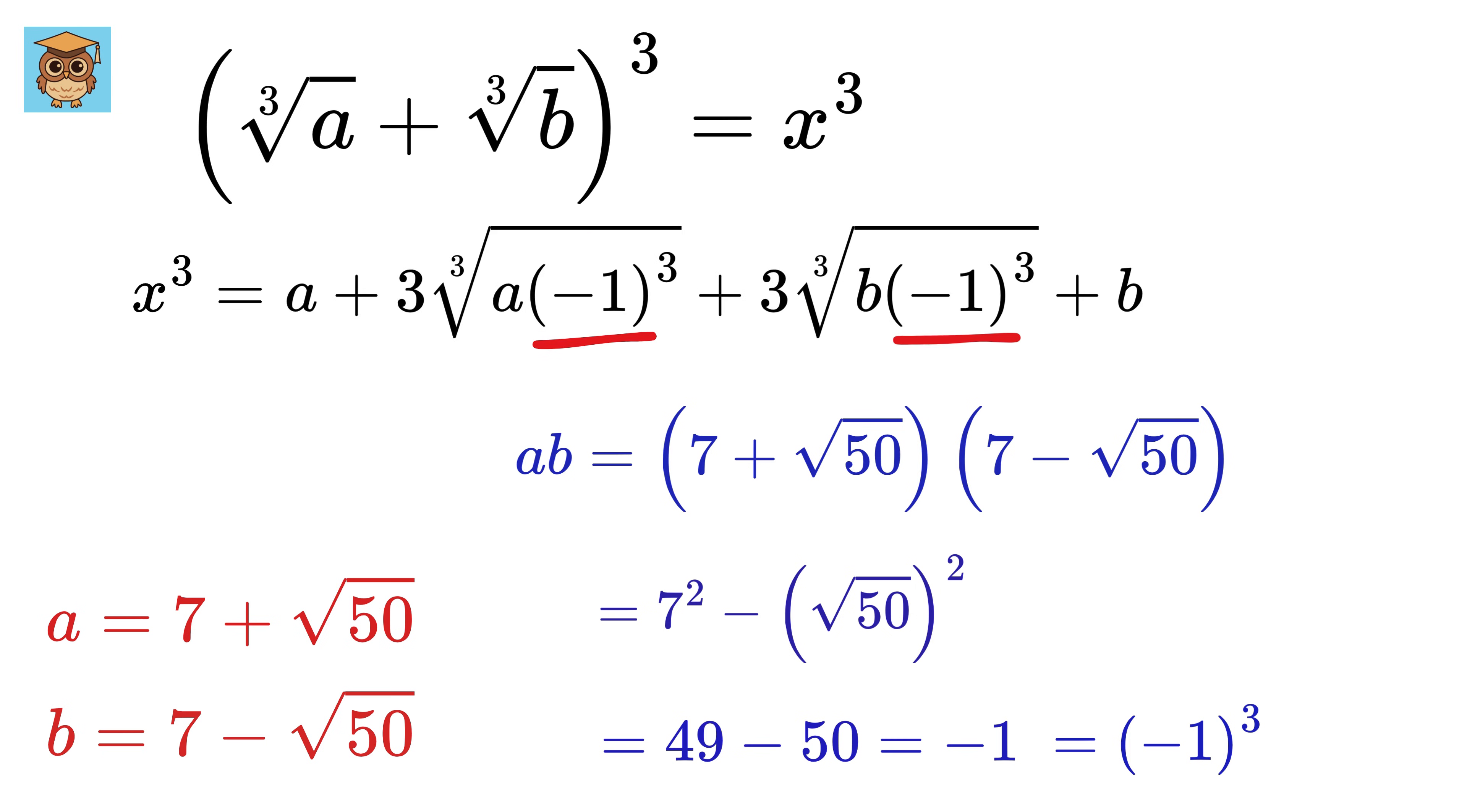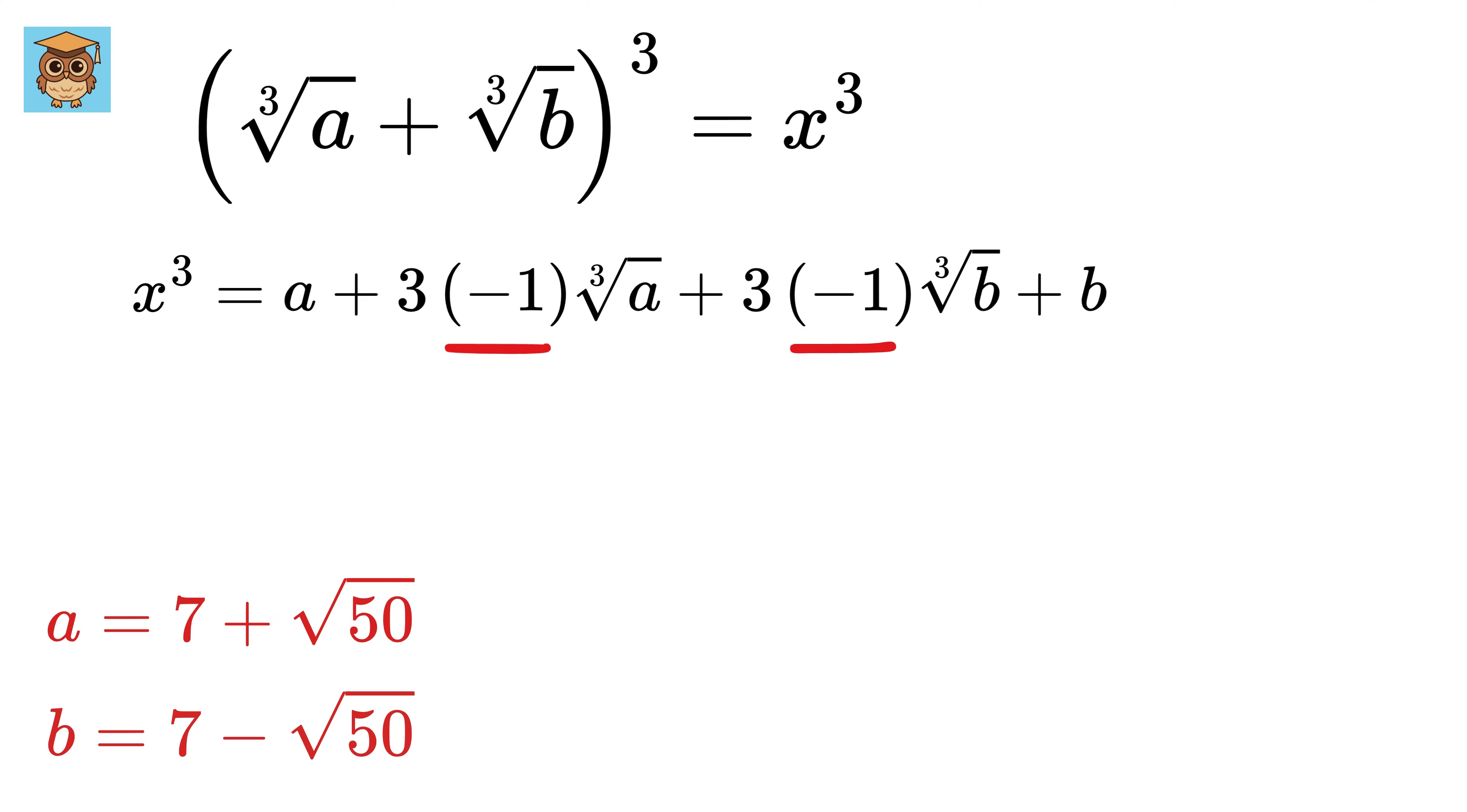Now substitute that here, and now if we take the cube root of negative one, we get a negative one here. So this will become A plus B minus 3 times this plus this. Amazing! Now this sum is same as X, and therefore we have X cube equals A plus B minus 3 times X.